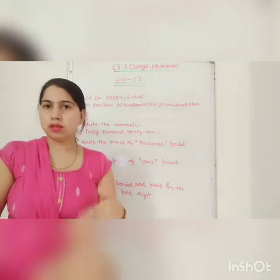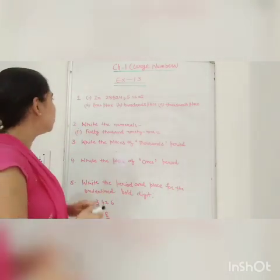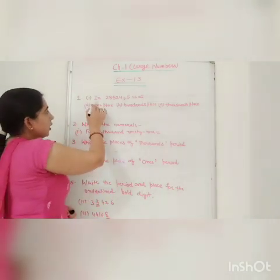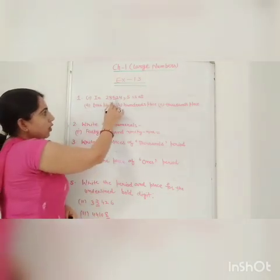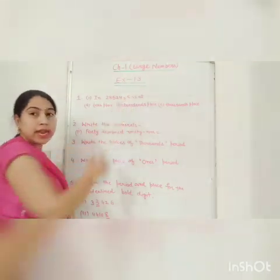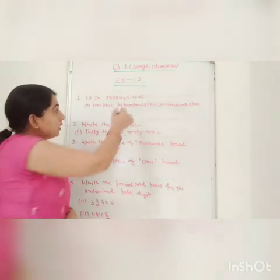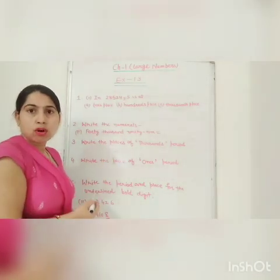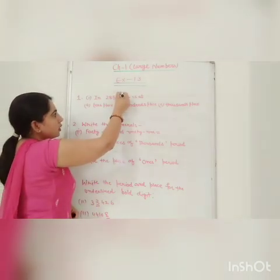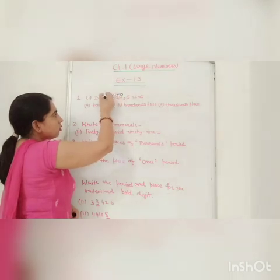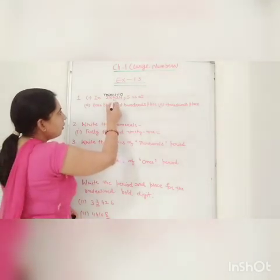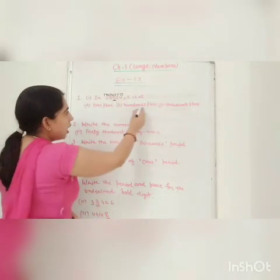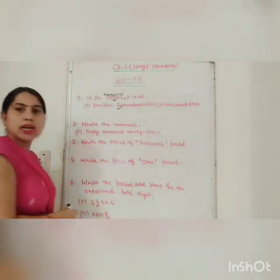I will take questions one by one. In your first question, there is a multiple choice question. In 28,524, 5 is at — means you have to find out which place 5 is at. So what will you do? You write here: 1's, 10's, 100's, 1000's, and 10,000's. So you know 5 is at 100's place. So 100's place — option B is the correct answer.